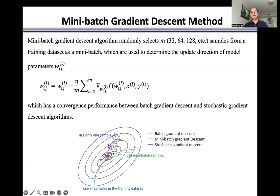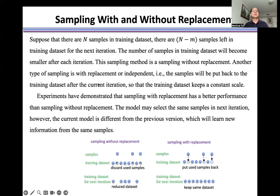Here we show three passes using mini-batch gradient descent. Suppose there are n samples in the training dataset. There are n minus m samples left in the training dataset for the next iteration. The number of samples in the training dataset becomes smaller after each iteration. This sampling method is sampling without replacement.